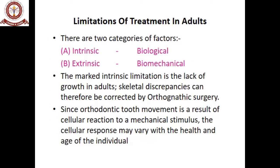The limitations of adult orthodontic treatment are not the same as treating a younger patient. These limitations can be categorized into intrinsic, which are biological, and extrinsic, which are biomechanical. A marked intrinsic limitation is the lack of growth in adults. For example, a skeletal discrepancy that can be corrected with growth modification — a face mask or headgear in a growing patient — cannot be done in an adult and can therefore only be corrected by orthognathic surgery.